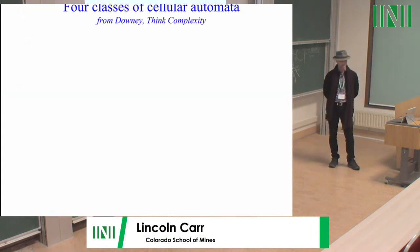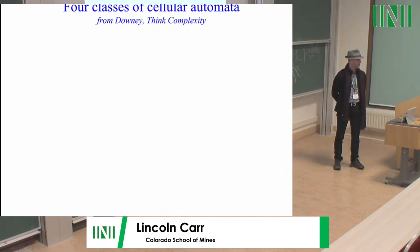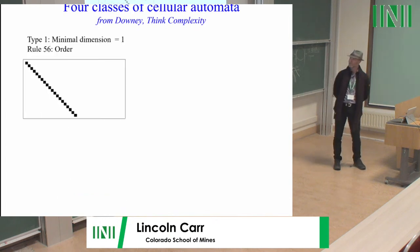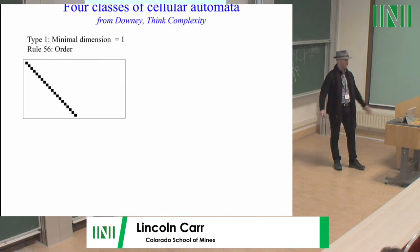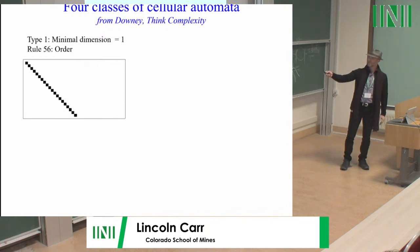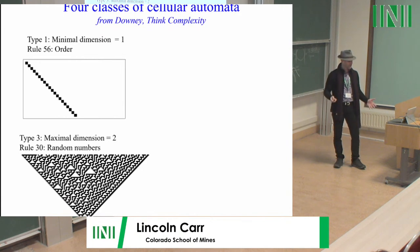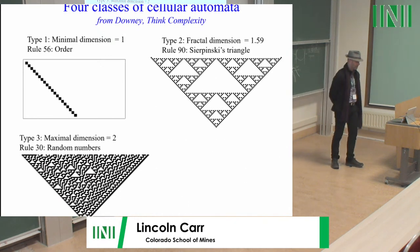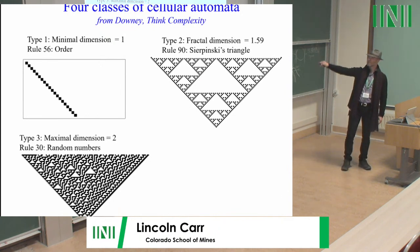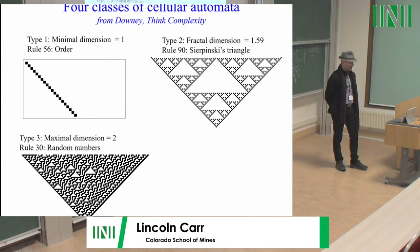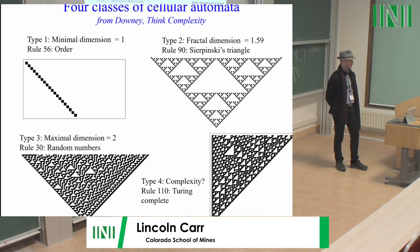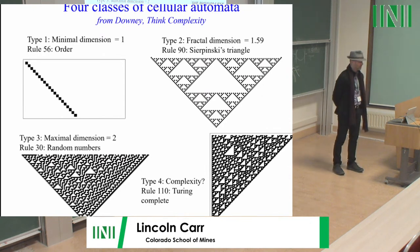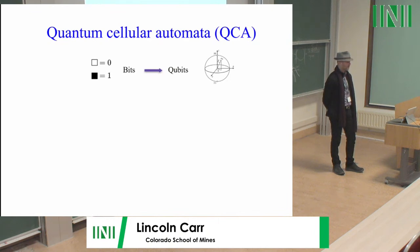To remind you about cellular automata: there's a very nice book by Downey called Think Complexity. He goes through the four kinds of elementary cellular automata in 1D with nearest neighbor rules. A minimal-dimension rule would be rule 56, which just propagates a bit upward in time. A maximal-dimension rule is rule 30, a random number generator. Rule 90 has a fractal dimension of 1.59. So we see three very different kinds of rules dimensionally in elementary cellular automata, and in fact one of them is Turing-complete — a complexity-generating rule. Now I'd like to talk about the quantum generalization that we realized on Google's quantum computer.